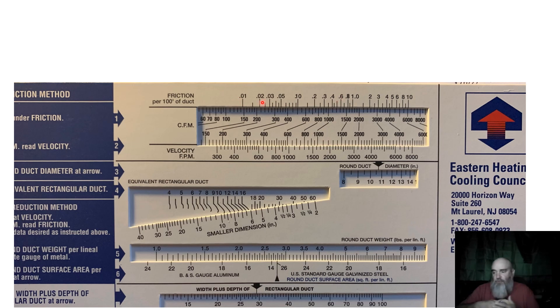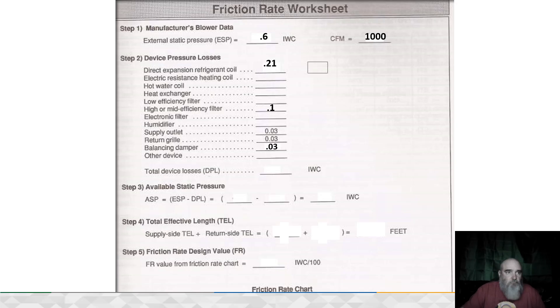Let's actually figure out how much resistance to airflow per 100 feet that the duct system has and how we do that. What we have here is the friction rate worksheet. The friction rate worksheet is the process to determine what our friction rate is.